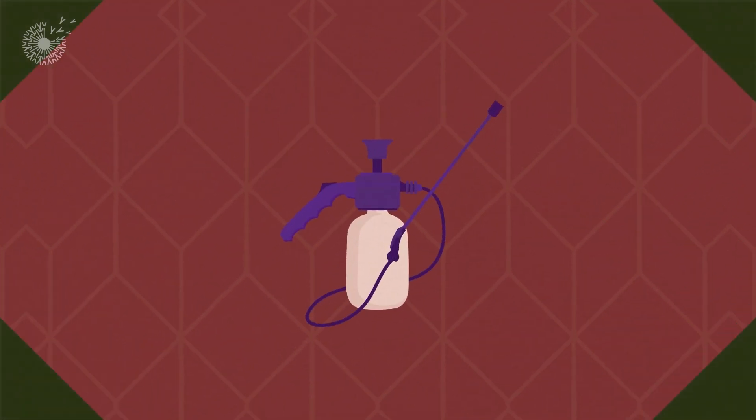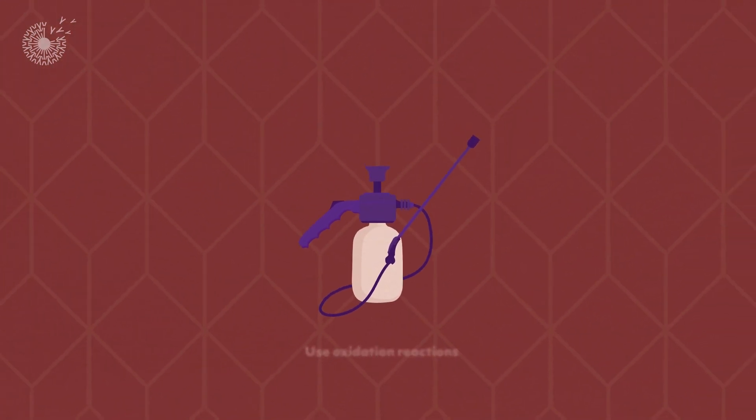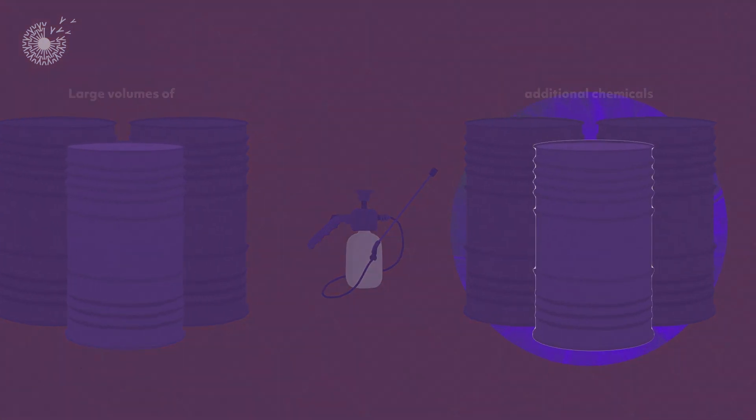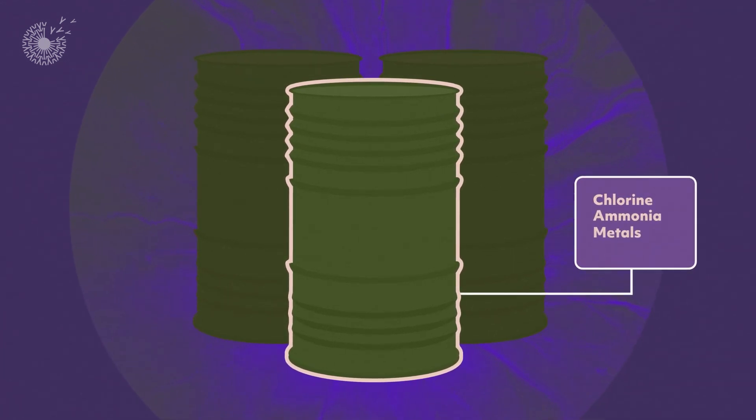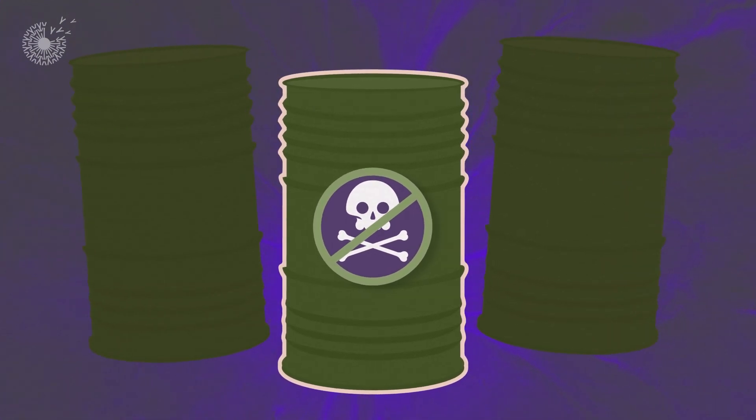Many industrial cleaning solutions use oxidation reactions, but they require large volumes of additional chemicals to function. Chemicals that often contain chlorine, ammonia, metals, or other substances that are toxic themselves and can pollute the surrounding environment.